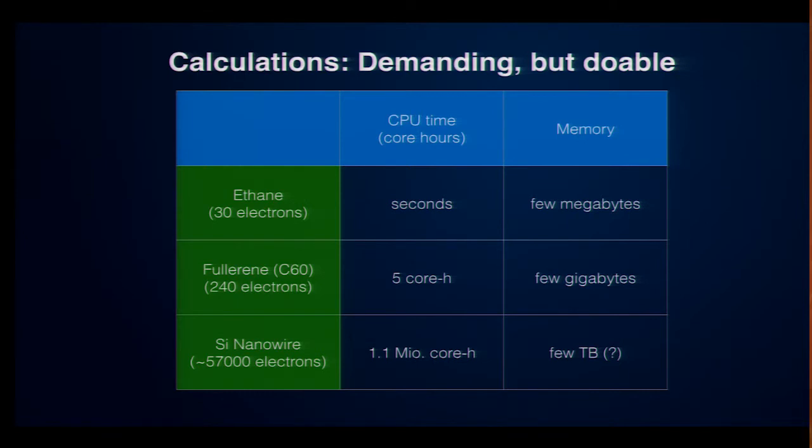I recently did a calculation of a fullerene. This is kind of a football. Okay, I'm in the United States. I should say a soccer ball of carbon atoms. And it took roughly four hours, five hours on one core and needed a few gigabytes. So, this is a bit larger, and the largest calculations I've recently come across, I didn't do that last one myself. This was done by a Japanese group. It's a silicon nanowire consisting of roughly 15,000 silicon atoms and 60,000 electrons. And the calculation consumed 1.1 million core hours, and judging from the data they gave in the paper probably needed a few terabytes at runtime.